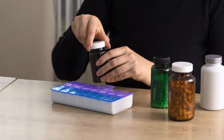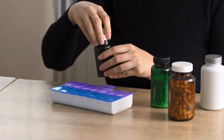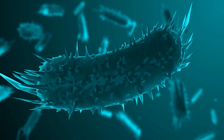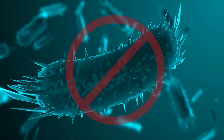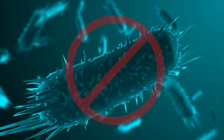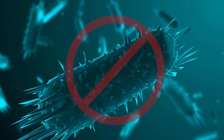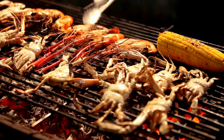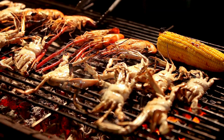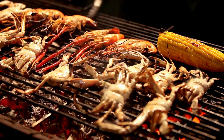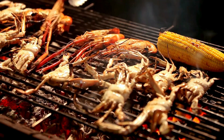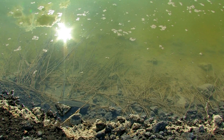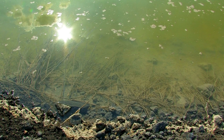Preventing Vibrio infections involves several key practices. Ensure that seafood is cooked thoroughly, and avoid eating raw or undercooked shellfish. Additionally, individuals with open wounds should avoid contact with potentially contaminated water.